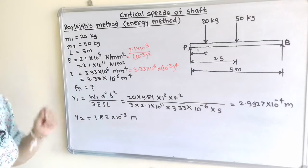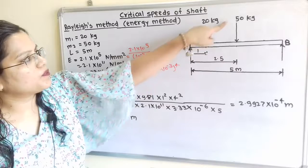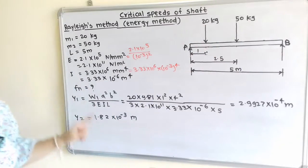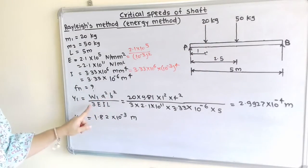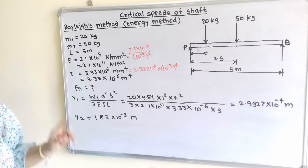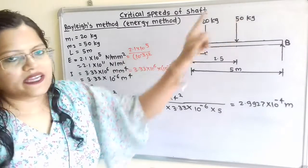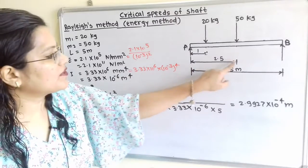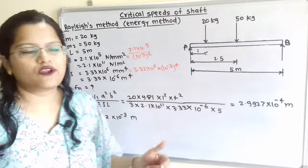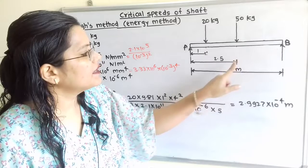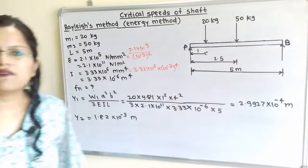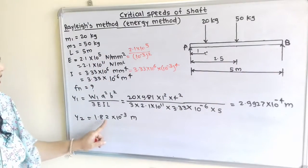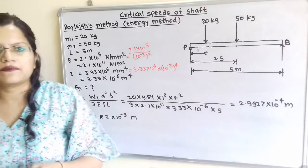In the same way we calculate the deflection due to the 50 kg point load. Using the formula W2 A squared B squared divided by 3 E I L, where W2 equals 50 into 9.81, A equals 2.5 meters, and B equals 2.5 meters. Calculating gives Y2 equals 1.82 into 10 raised to minus 3 meters.